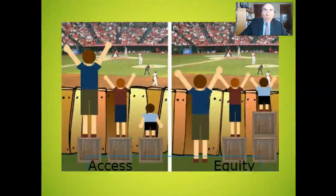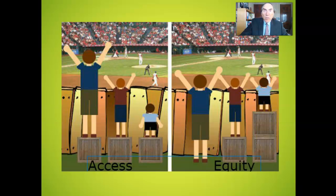Educators first distinguish the difference between technology accessibility and technology equity. Accessibility means the available number of technology devices and internet connections in a school or home. On the other hand, equity means that all students have equal opportunities with technology to achieve their fullest potential regardless of race, ethnicity, gender, disability, or socioeconomic status.